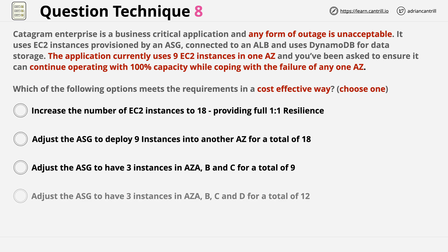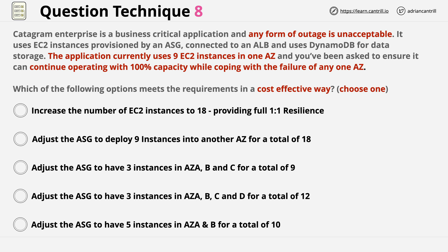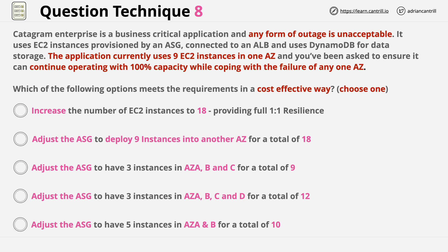Now in this particular case there are a total of five answers. Go ahead and pause the video, review the answers, and try to spot the key elements of them. We know what the question wants, so all we have to do with each answer is identify the pieces which matter: the number of instances in each availability zone, the number of availability zones, and the total number of instances. We need to pick the answer with the least number of total instances which meet the high availability requirements.